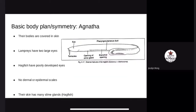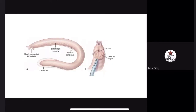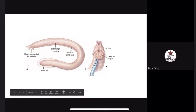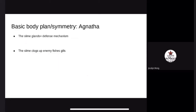Anatomy and Physiology. The body of Agnathans is covered in skin. Lampreys have two large eyes while hagfish have poorly developed eyes. They do not have dermal or epidermal scales. Hagfish have many small openings on the side of their body called slime glands. Here are the slime glands, as well as the external gill opening and the mouth.